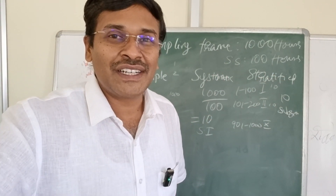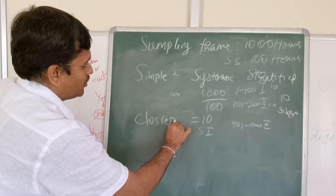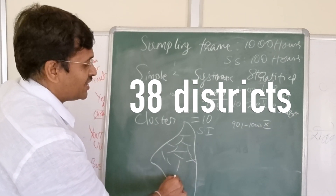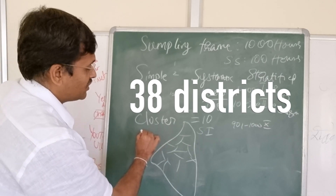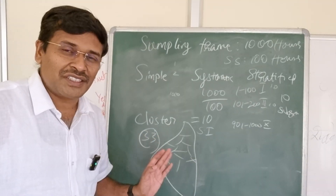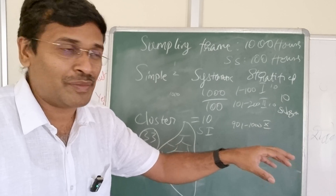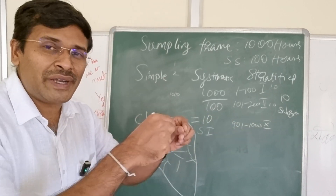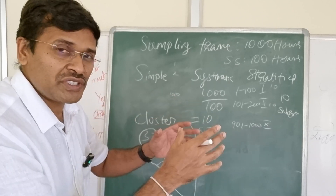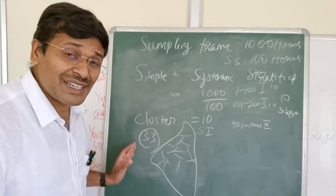The last one is cluster random sampling, which is almost similar to stratified. For example, in Tamil Nadu we have about 33 districts, and each district is one cluster. From these 33 clusters, we use a statistical technique to select only five clusters. From those five clusters, we use simple random sampling to collect samples. It is a step-by-step process — we use a technique called population proportionate to size to select particular clusters, and from there we randomly select the samples. That is cluster random sampling.